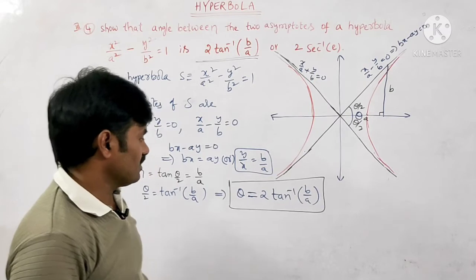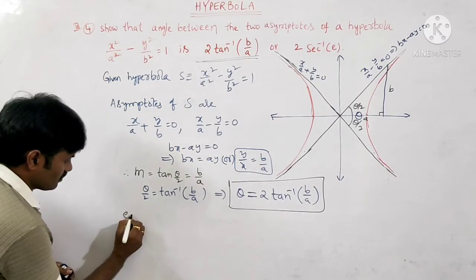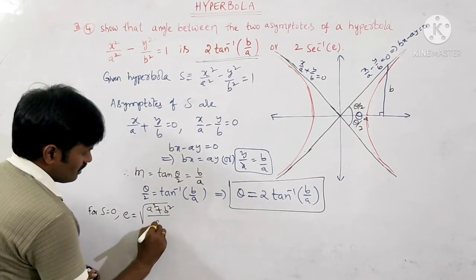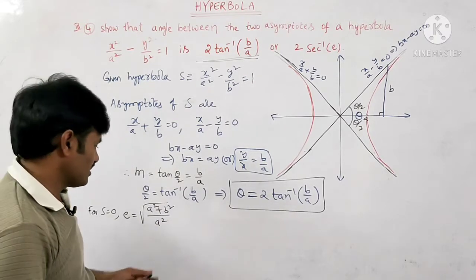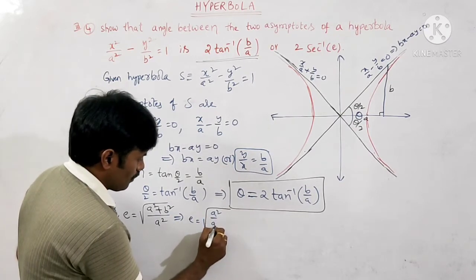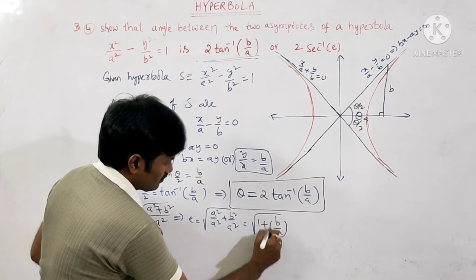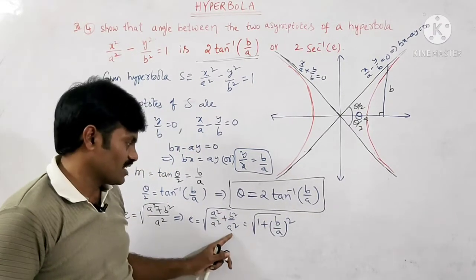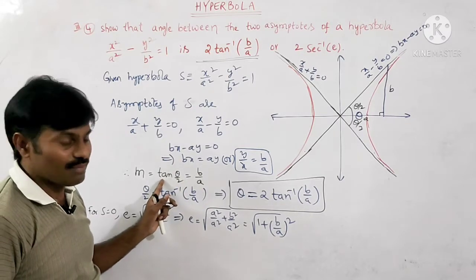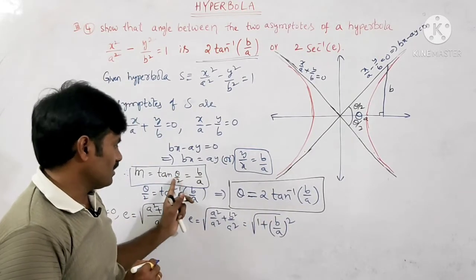To write in terms of secant, we first find the eccentricity. The eccentricity formula is e = √(a² + b²)/a, which can be written as √(1 + b²/a²), or √(1 + (b/a)²). From our earlier result, b/a = tan(θ/2), so we substitute b/a with tan(θ/2).